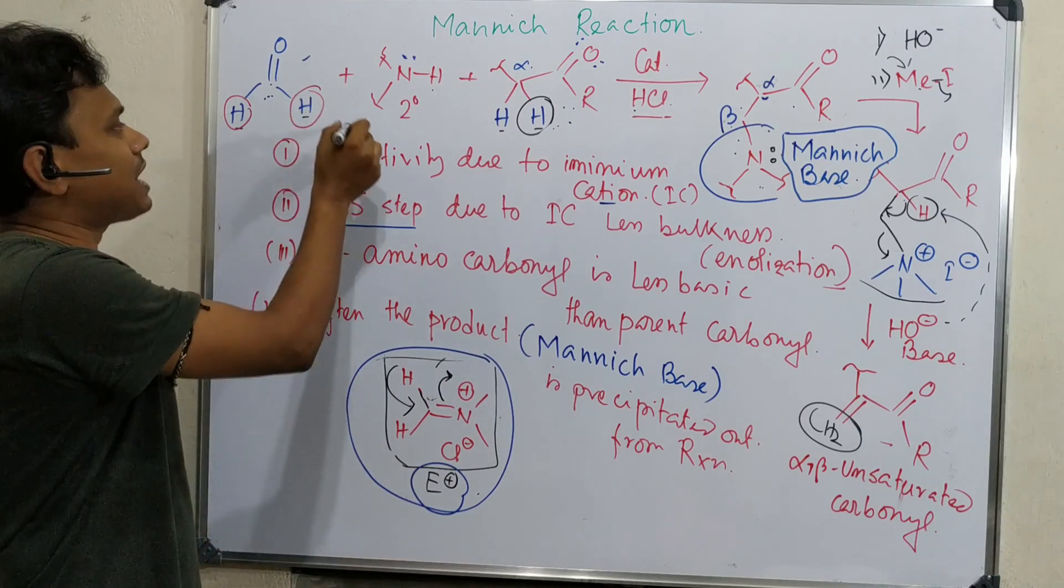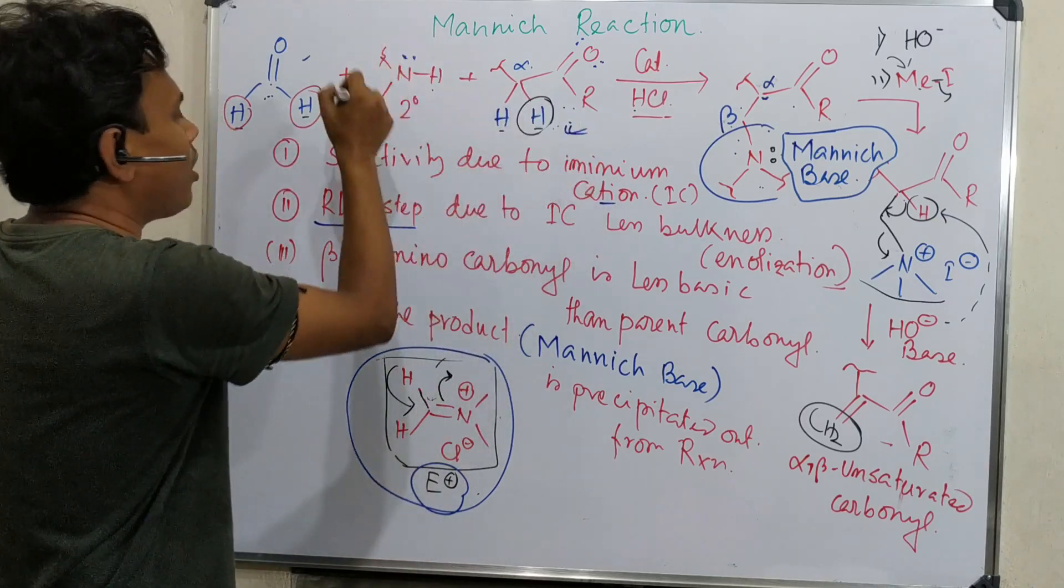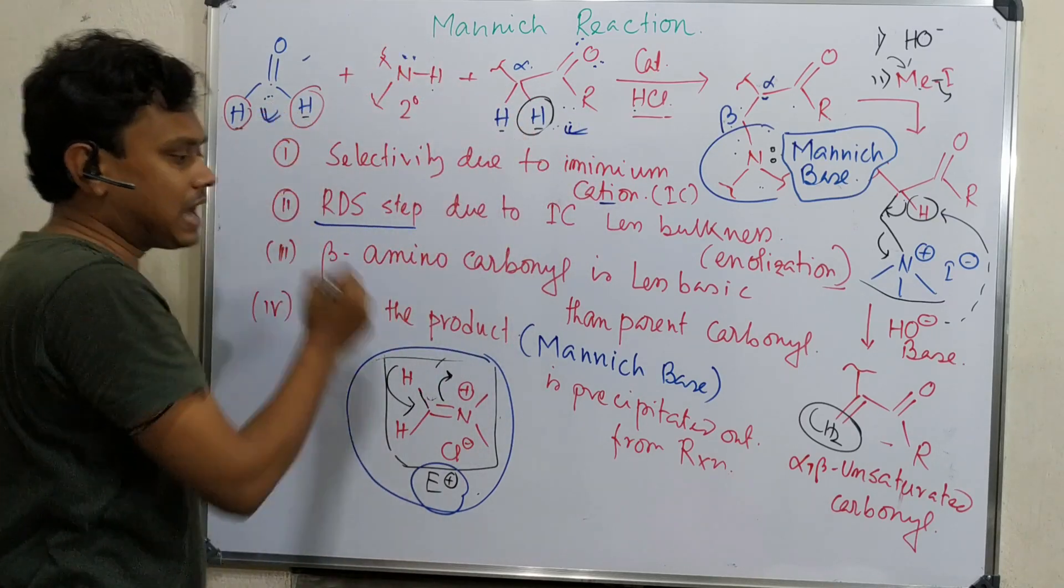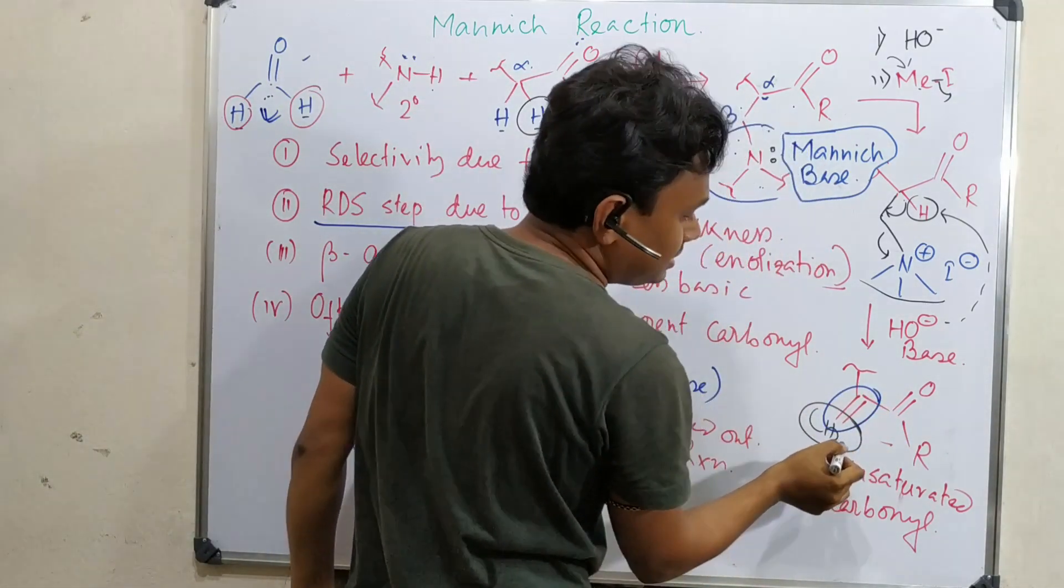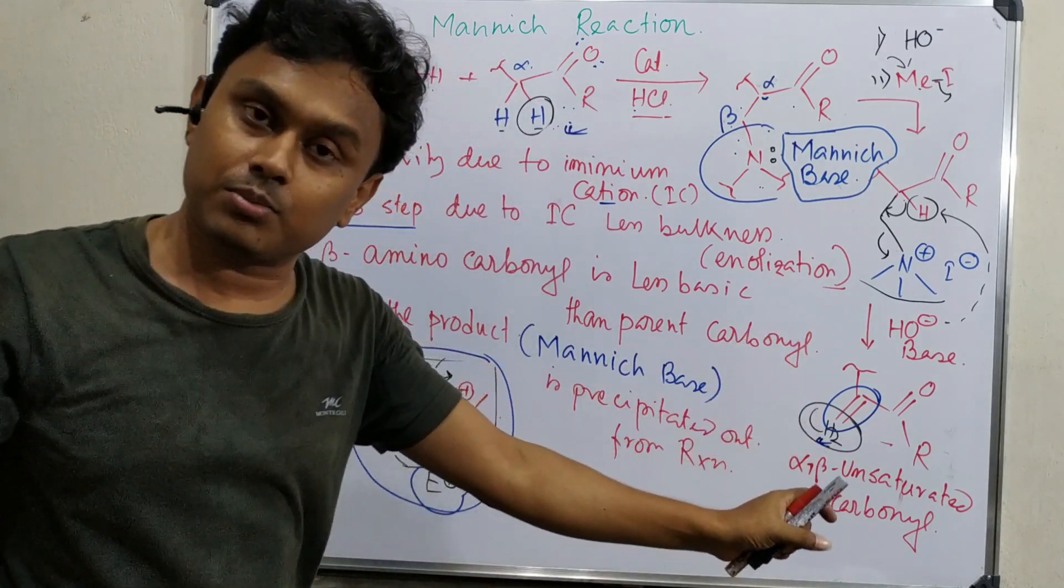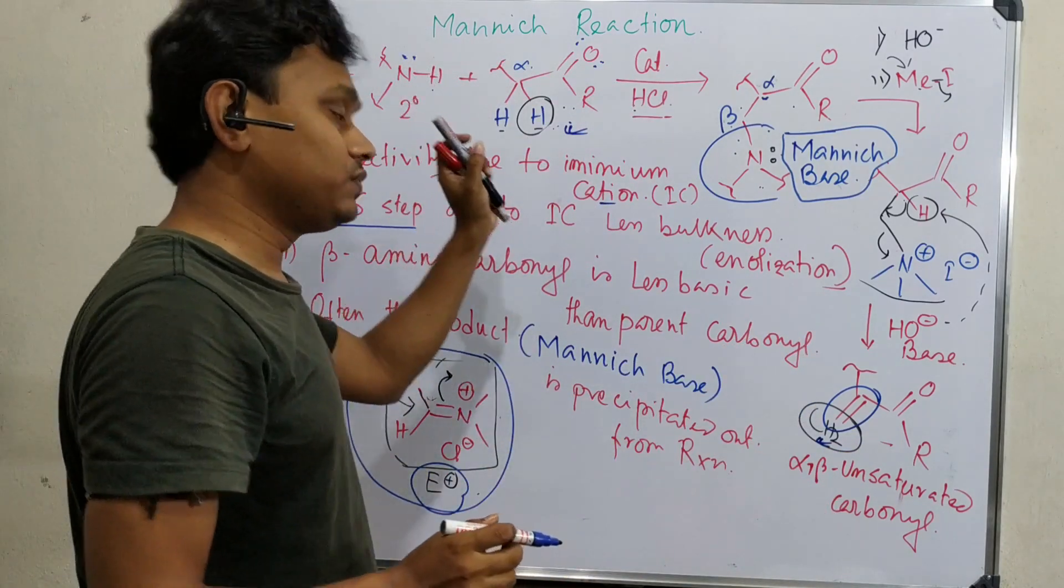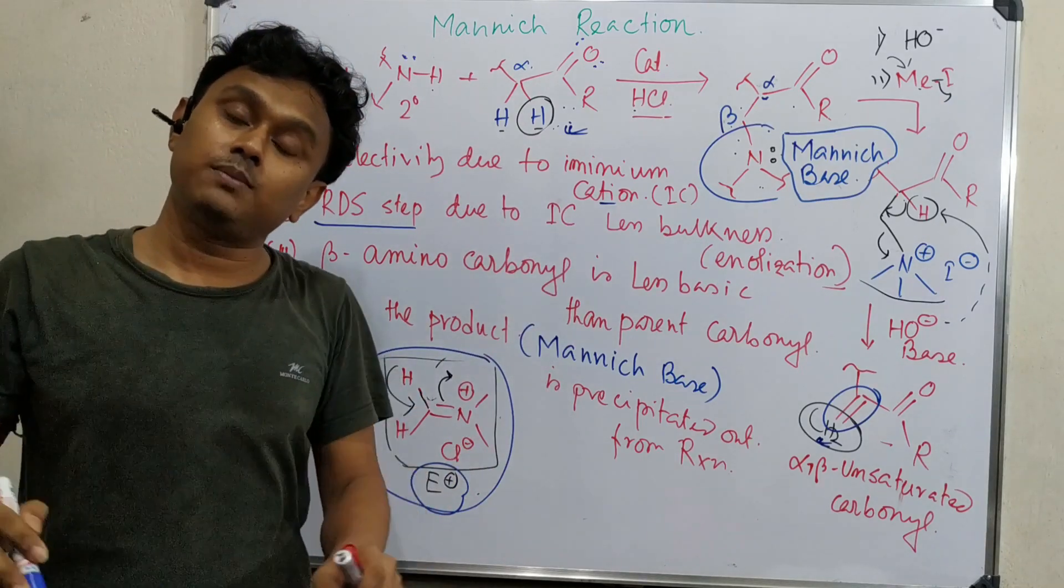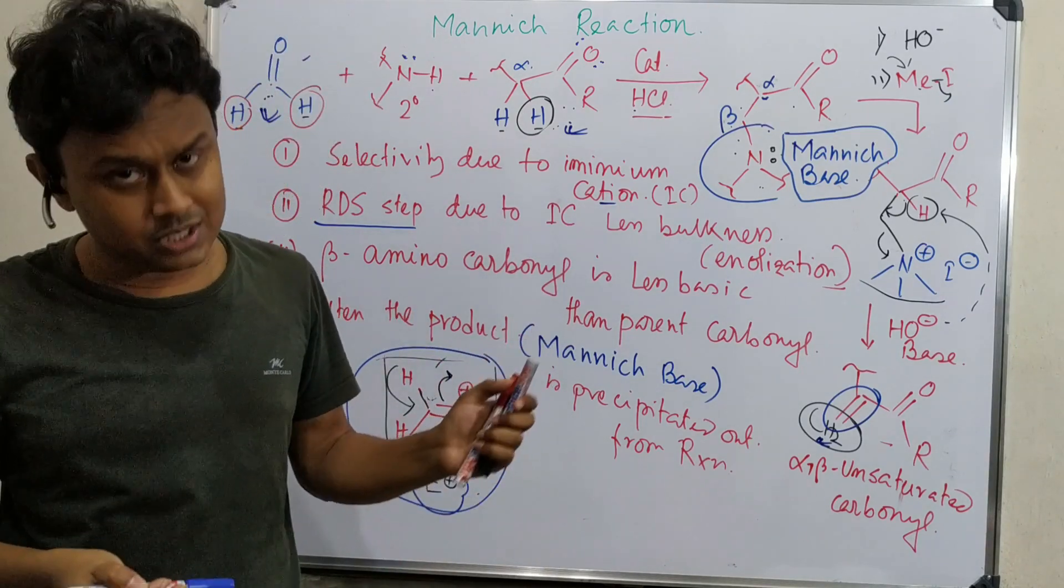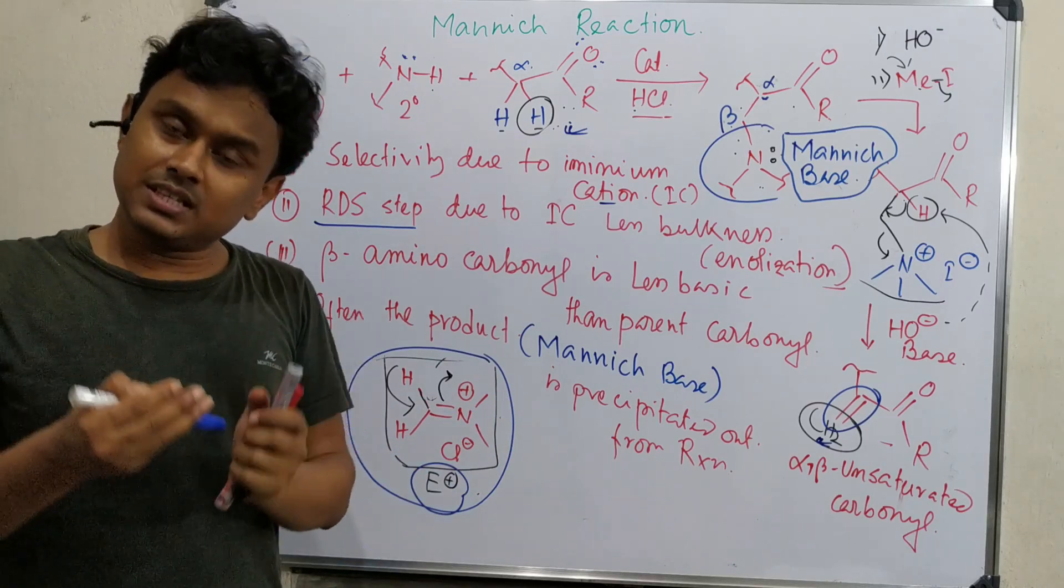So this is the overall description about this Mannich reaction which produces ultimately an aldehyde or ketone and formaldehyde to an alpha beta unsaturated compound. This is an alpha beta unsaturated carbonyl compound. In the next video I shall explain about mechanism which will help you to have a clear understanding about this reaction.